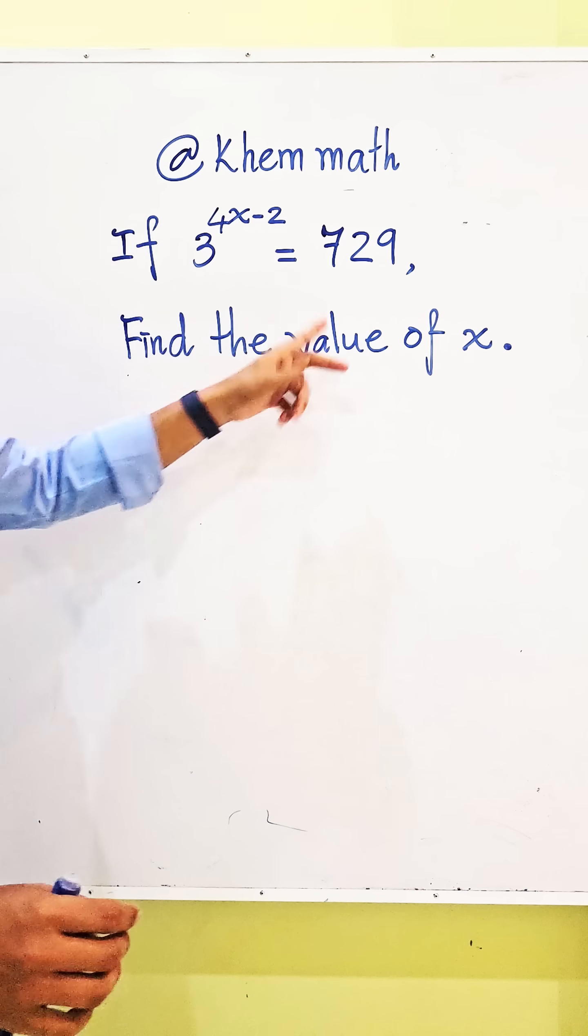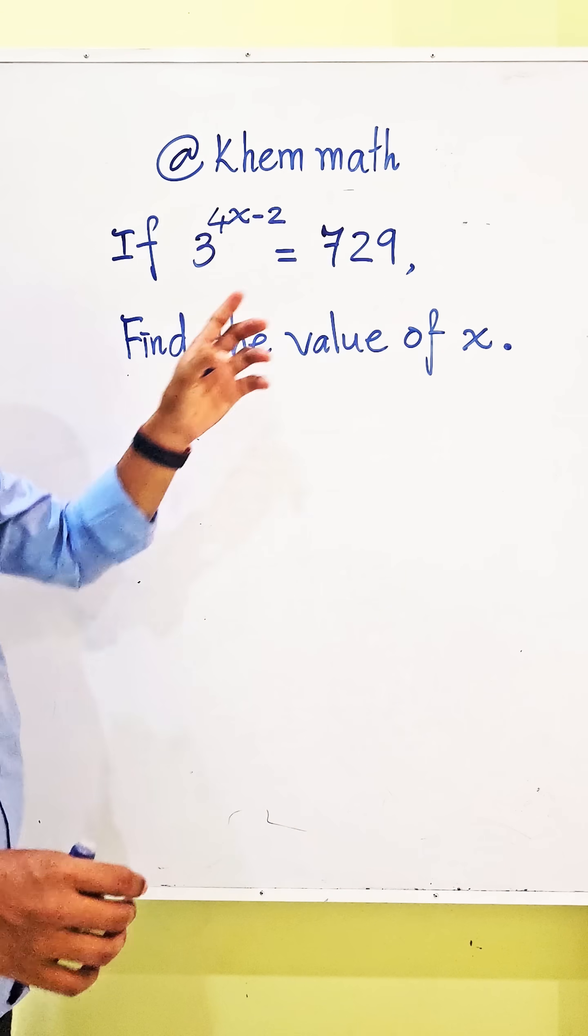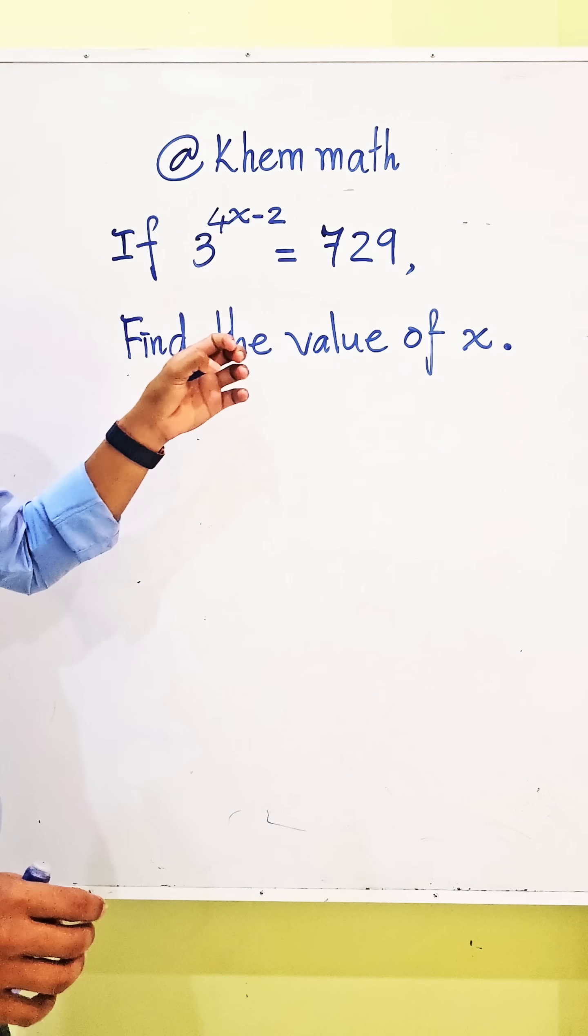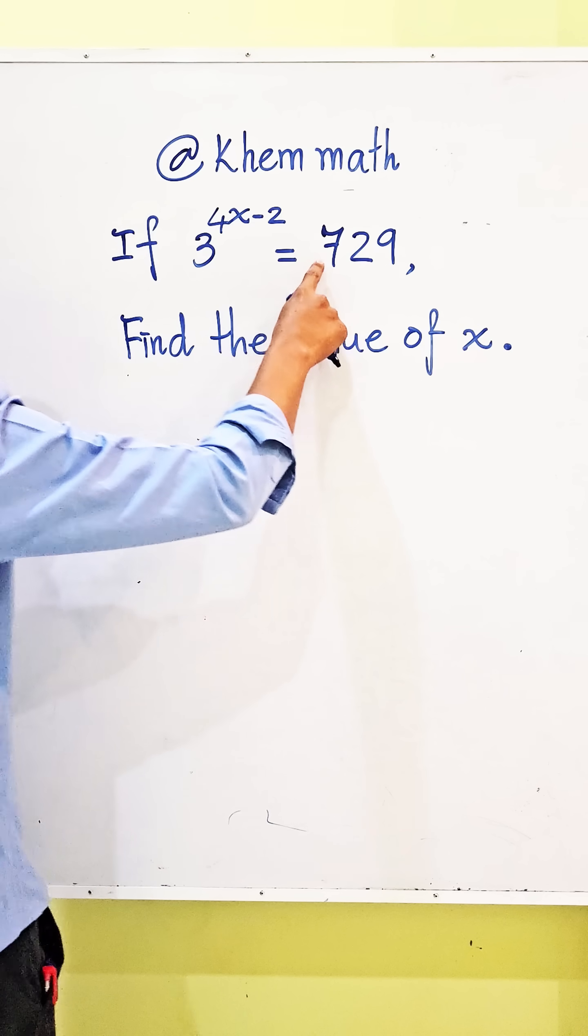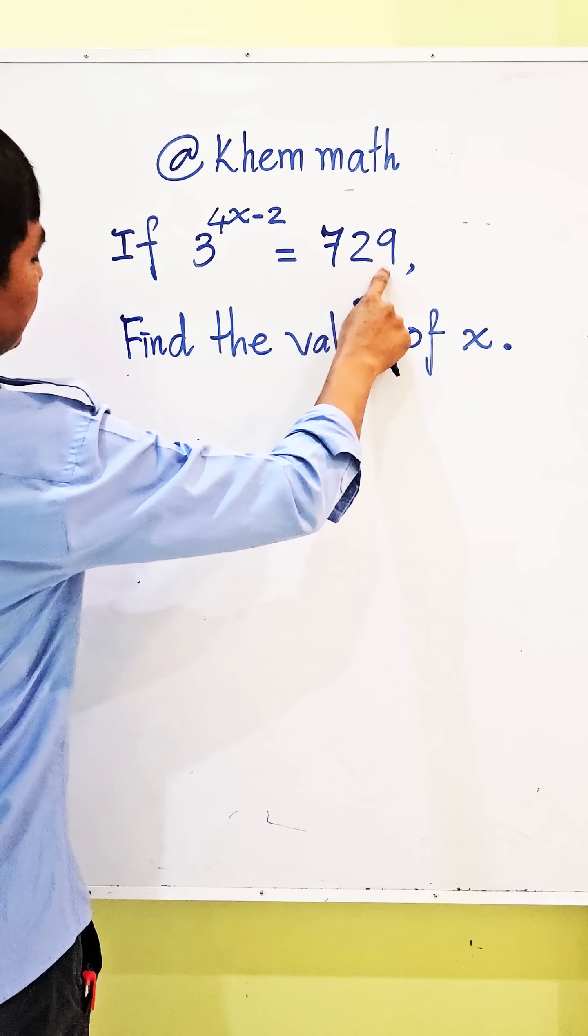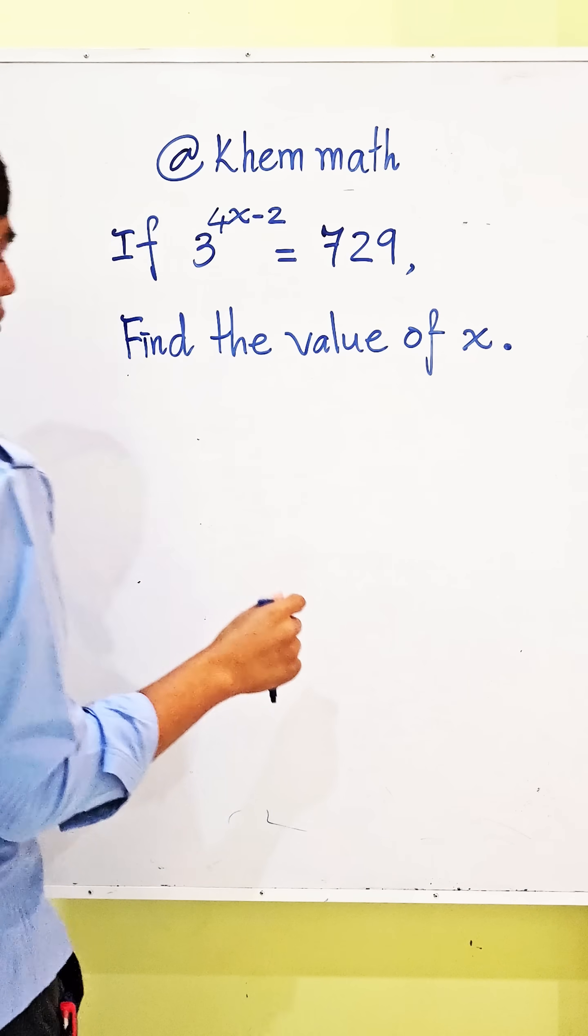We must write 729 as an exponent in base 3. So we take this 729 and divide by the prime factor.